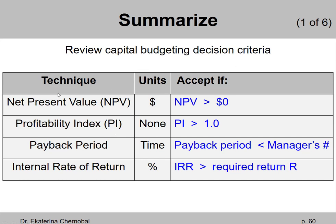For the net present value approach, what we were calculating is the dollar amount — the profit. The project should be accepted if the net present value is above zero dollars.